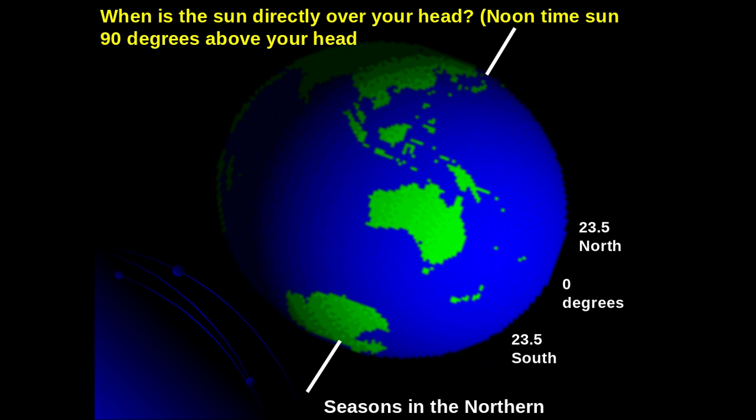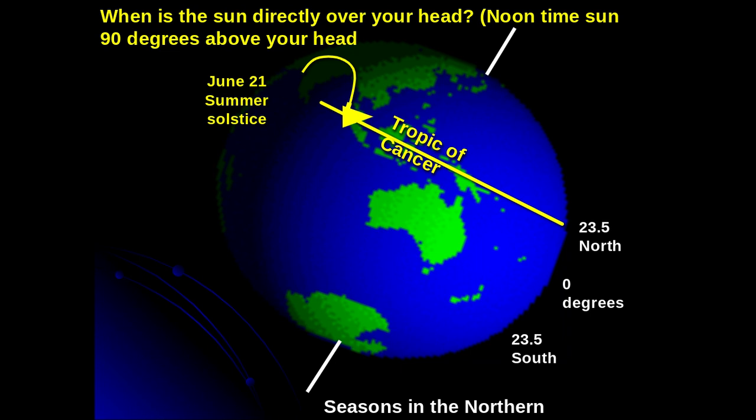The next question to ask is: when is the sun directly over your head? This is known as the noontime sun angle — when the sun is exactly 90 degrees or perpendicular above your head. So if you were standing up, you would look straight up and the sun would be at 90 degrees. What if a person wanted to experience summer all year long? The answer is yes, if you were able to follow the noontime sun angle across the globe over the year's period.